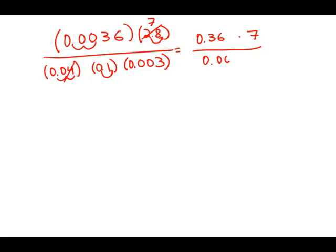So now I'm going to move the decimal of this three places over. That means I'm going to move this decimal three places over. That means I have to add an extra zero.